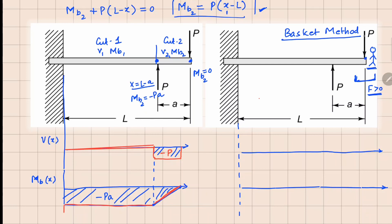Starting from this point here, I reach the first force which is acting downwards — that's a negative force — so I get minus P in my basket. This value of minus P stays the same until I reach the next point. Then suddenly I encounter a new force which is positive P. I already had minus P in my basket, and now I add plus P, so both combine and the new force value is zero from here to here. Walking further to the left, there are no more forces, so I maintain that value. That's how we find shear force simply by walking from the right and counting forces in the positive direction.